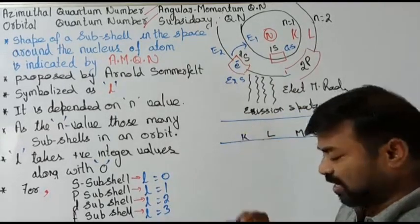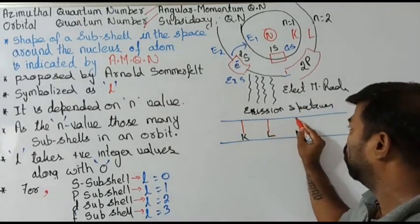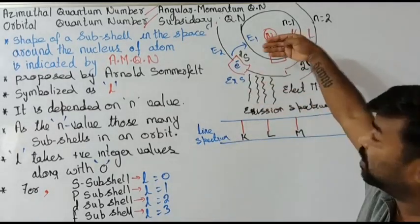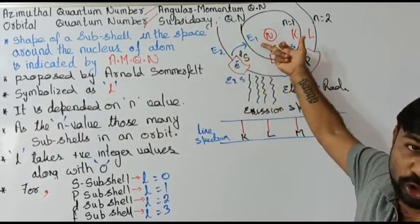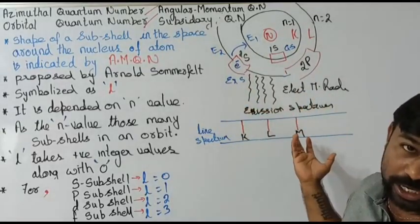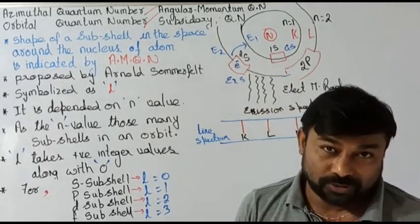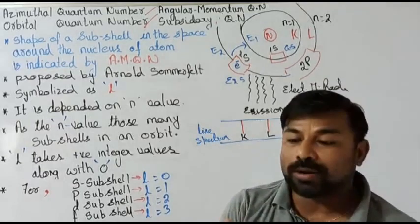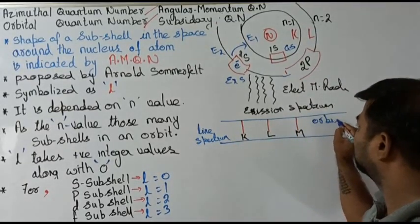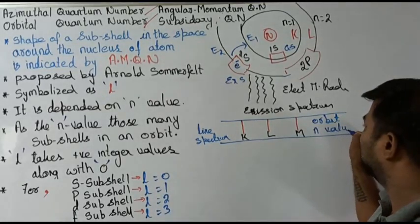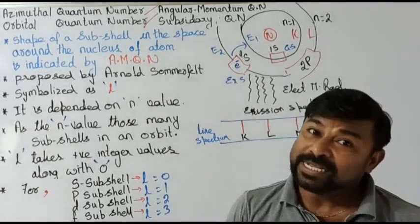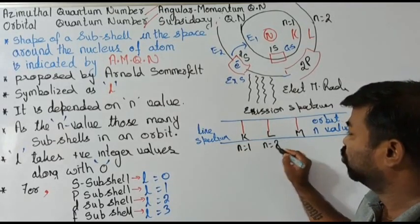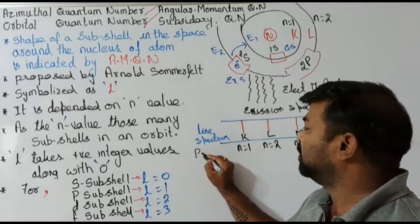The emission spectrum is represented by a line spectrum. When an electron comes from a higher energy orbit to a lower energy orbit, some energy is released as electromagnetic radiation, which can be seen in the emission spectrum as lines. These lines indicate the orbits and are denoted with the n value — the principal quantum number. For K it is one, for L it is two, and for M it is three.